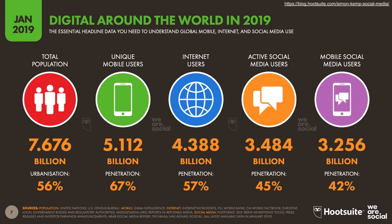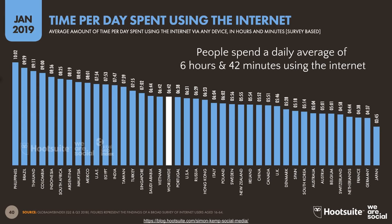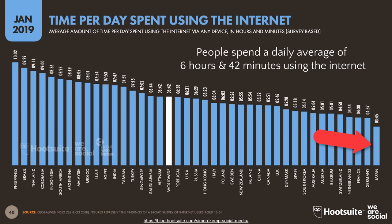Why would you want to be on the web? Stats from a Hootsuite SlideDeck show the total population of the world is 7.676 billion people, and the number of unique mobile users is 5 billion. We've got you covered there with Android and iOS support, but internet users — people on the web — is 4.3 billion. People are spending a lot of time on the web, growing at 9.1% from last year. Time spent per day averages 6 hours and 42 minutes worldwide; the Philippines spend over 10 hours, Japan about 3 hours 45 minutes, and the U.S. is just below the worldwide average at 6.5 hours.